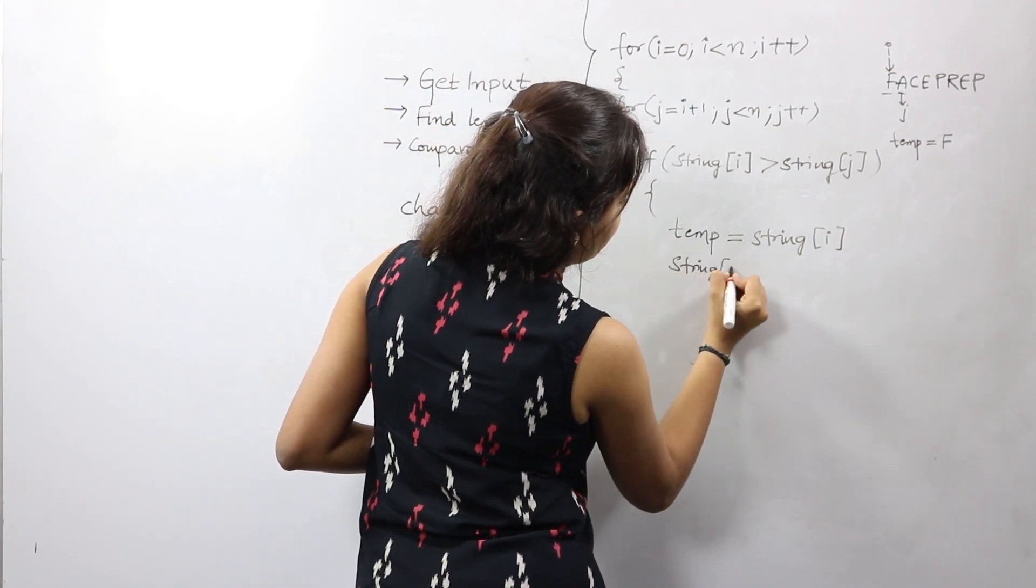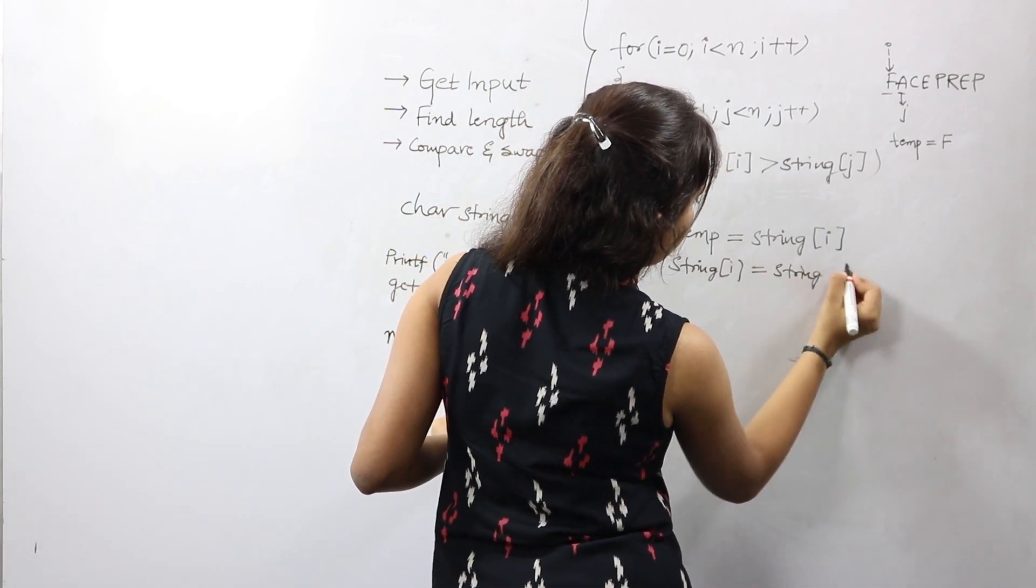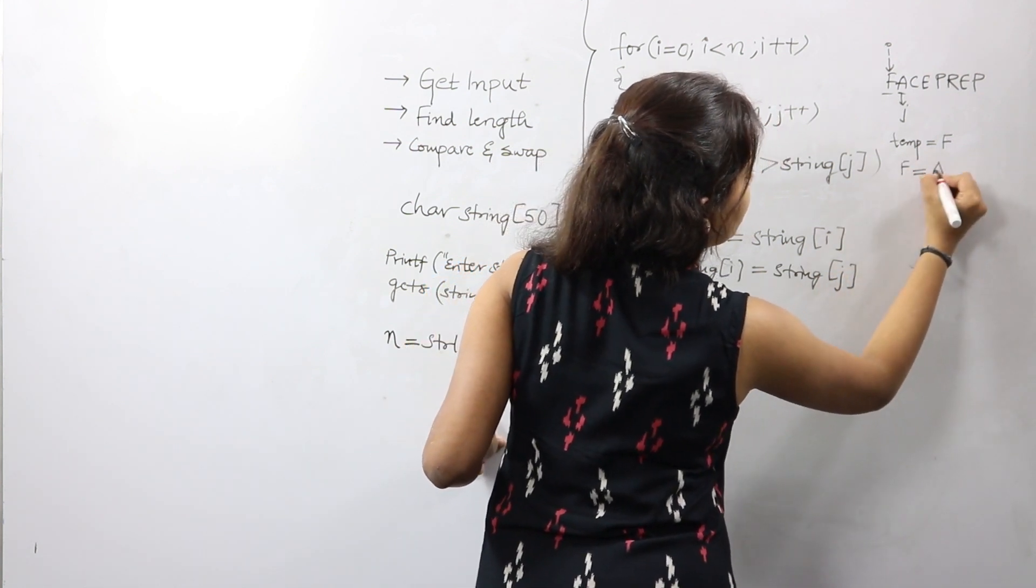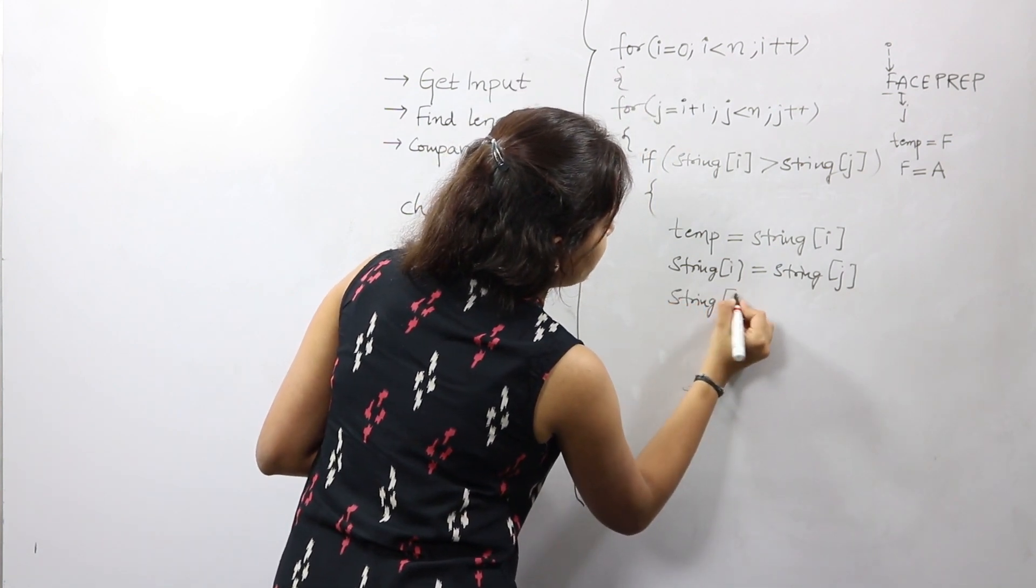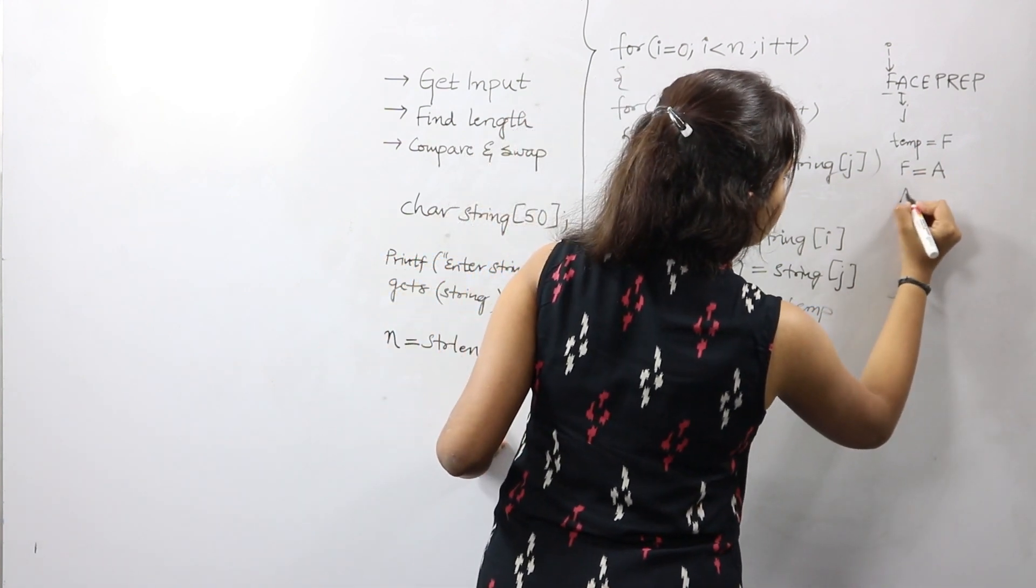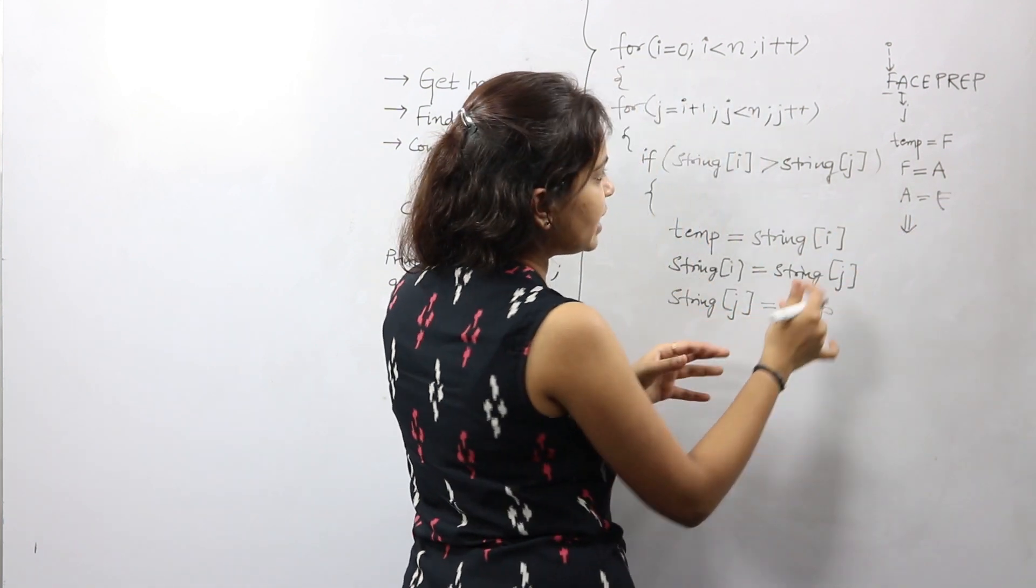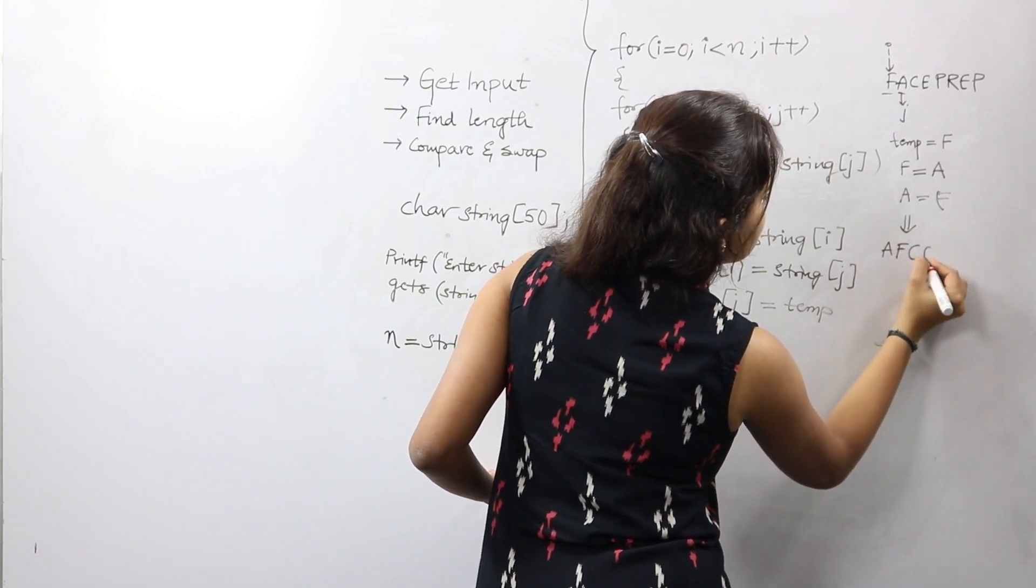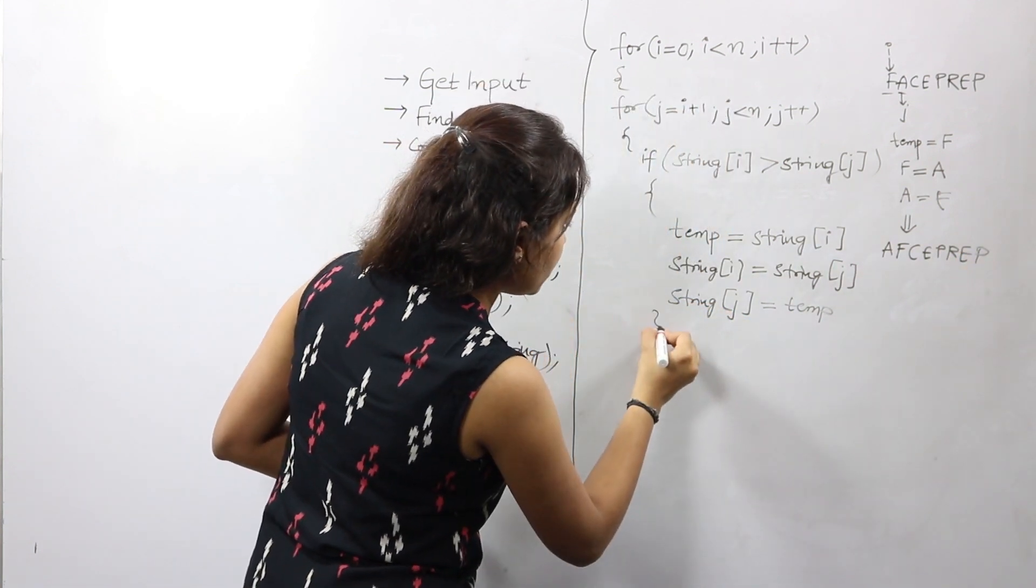String[i] is equal to string[j], so in the place of F we would be swapping A. And finally, string[j] is equal to temp, so in the place of A, F gets stored. Basically at the end of this iteration, the string becomes A F C E P R E P.